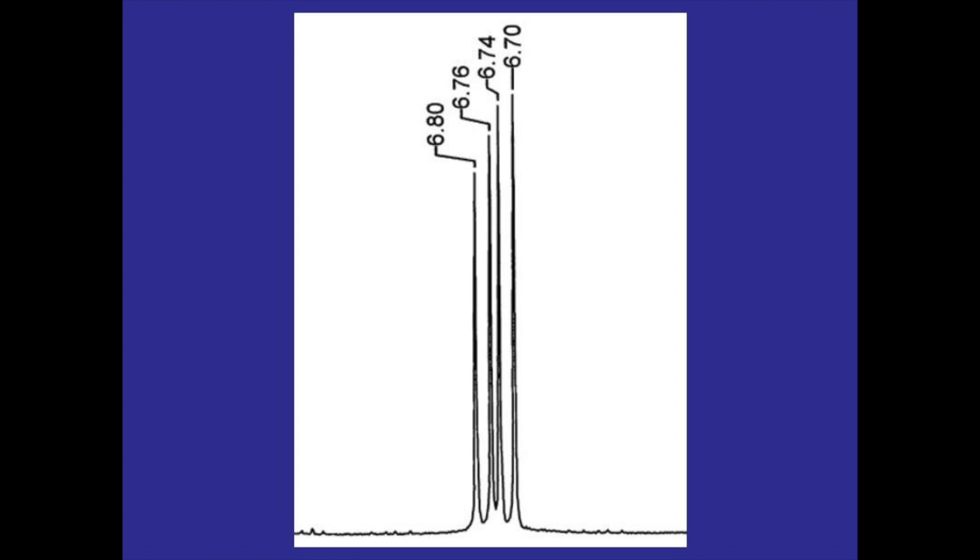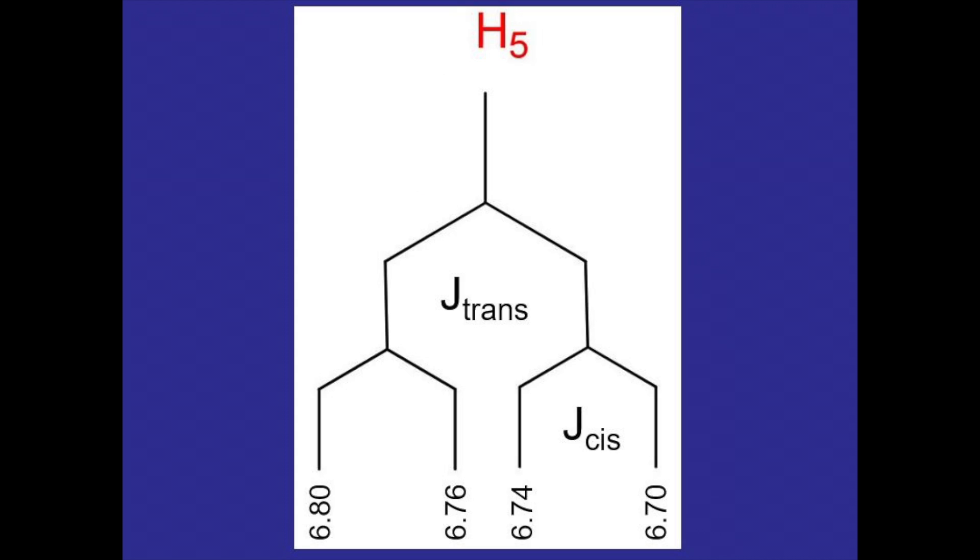From this we can actually calculate the trans and cis coupling constants using the PPM values for each peak. So I'm going to go ahead and transfer those numbers to the bottom of the splitting tree that we created earlier, and then if I wanted to calculate the cis coupling constant, I would just need to measure this distance here, and I could do that by subtracting this number from this one, or I could subtract this value from this one because that distance would be the same.